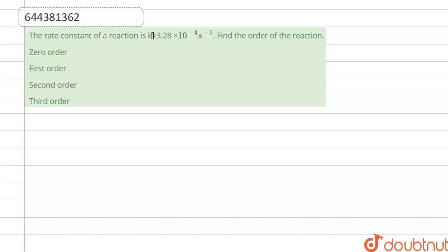The rate constant of a reaction is k equals 3.28 times 10 to the power minus 4 second inverse. Find the order of the reaction.